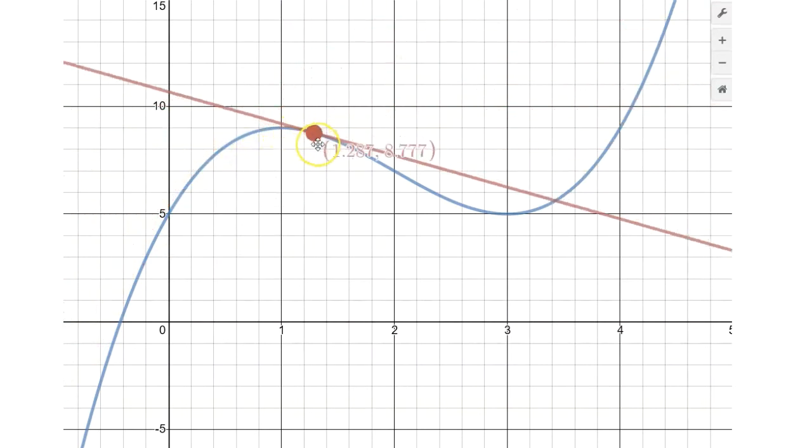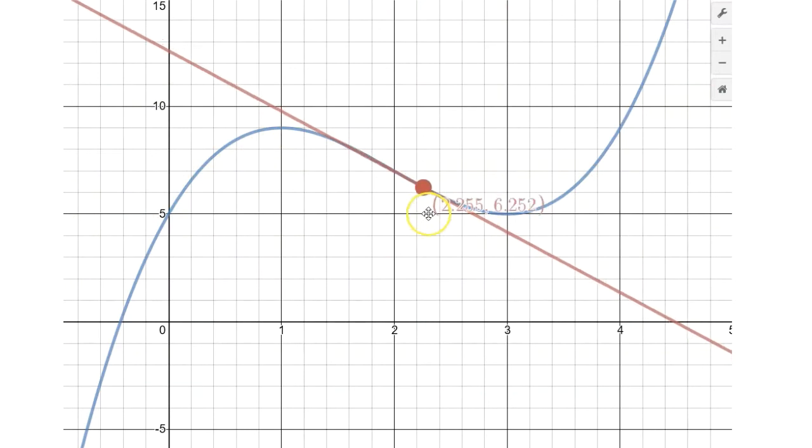Now what we're going to be interested in doing is looking at where the slope of the tangent line is in fact positive, and along this particular interval the slope of the tangent line is indeed positive.